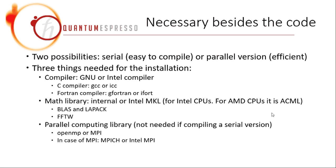On the other hand, serial compilation is usually much easier to do. There are three things needed besides the source code you download from the official website. The first is a compiler. Since Quantum Espresso is written in C and Fortran, you need a C compiler and a Fortran compiler. There are basically two choices for both: the GNU compiler — which is GCC or GFortran — or the Intel compiler specific for Intel products, which is ICC and IFort.